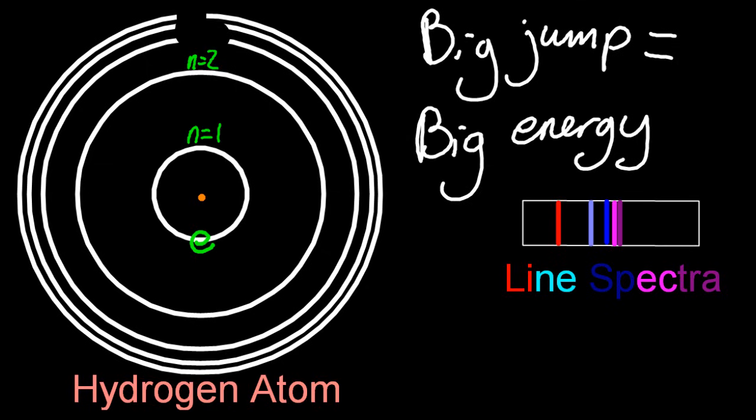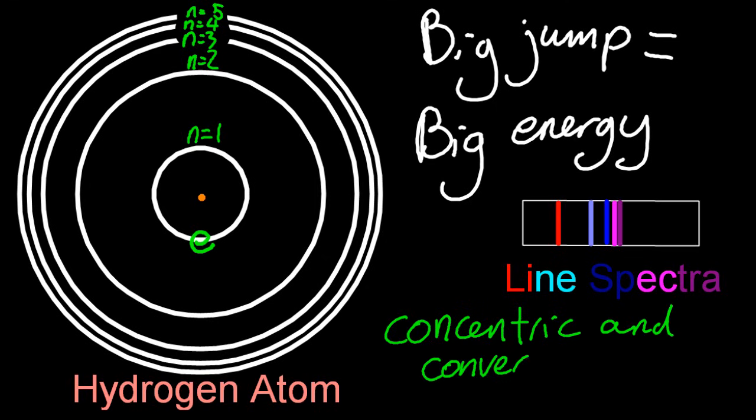Now these energy levels are labelled n. n equals one, n equals two, on upwards to infinity. I'm just going to stop at five so we don't have to wait for the heat death of the universe. The two words used to describe these energy levels are concentric - they're within one another, like an archery target - and they're converging. So the further you get from the nucleus, the energy levels get closer together. So you need to learn those words: concentric and converging.